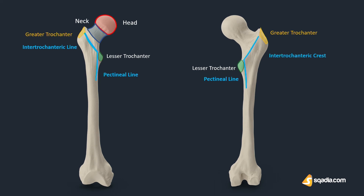The intertrochanteric crest is located posteriorly on the femur surface. This is a ridge connecting the two trochanters, marking the end of the proximal portion of the femur.